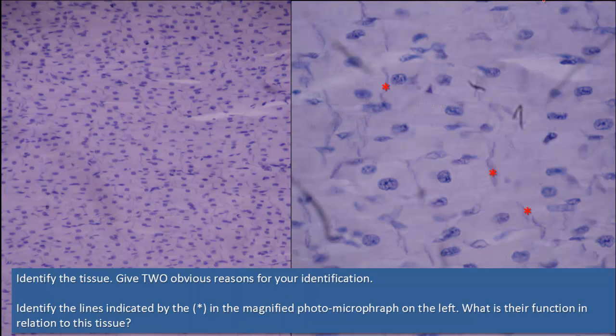Identify the tissue, give two obvious reasons for your identification, and identify the lines indicated by the asterisk. What is their function in relation to this tissue?